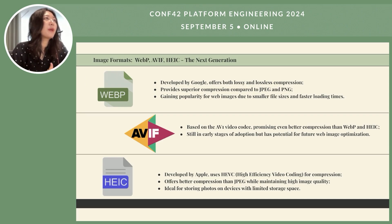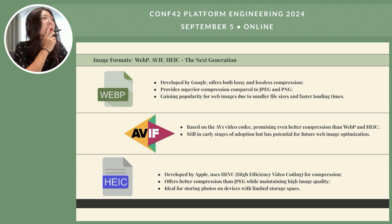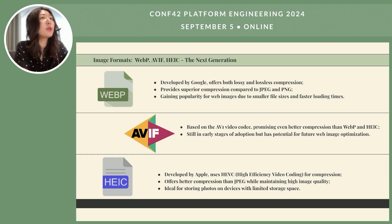There's also a breakdown of next-generation image formats. For example, WebP offers both lossy and lossless compression. HEIC is high-efficiency video coding for compression. And AVIF is based on the AV1 video codec — it's very promising, with even better compression than WebP and HEIC.